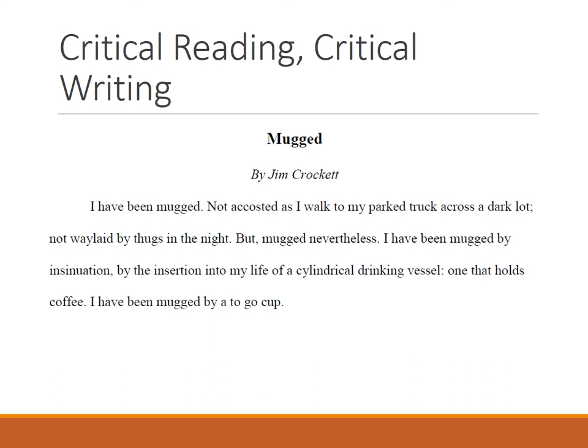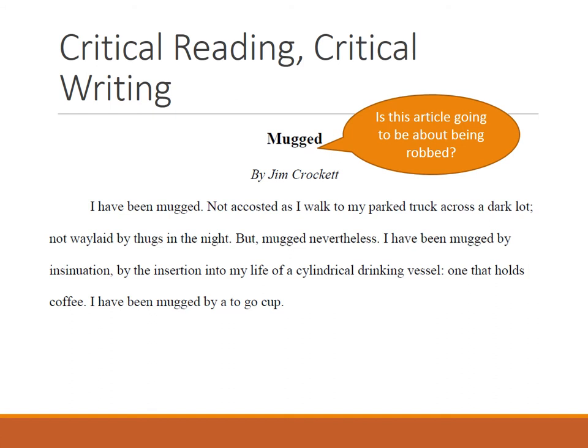Here is our example of critical reading and critical writing. I've included a copy of this essay in the lesson. This is 'Mugged' by Jim Crockett. The first thing you want to do is look at the title, and the question I might ask as I'm annotating is: is this article going to be about being robbed? What does 'mugged' mean? When you see the first words 'I have been mugged,' we think he's been robbed. But as we go along, he says 'not accosted as I walk to my parked truck across the dark lot' — not waylaid by thugs in the night — but mugged. 'Nevertheless, I have been mugged by insinuation, by the insertion into my life of a cylindrical drinking vessel, one that holds coffee. I have been mugged by a to-go cup.'